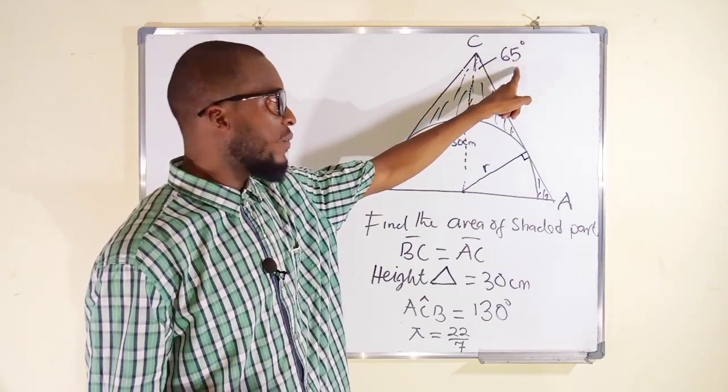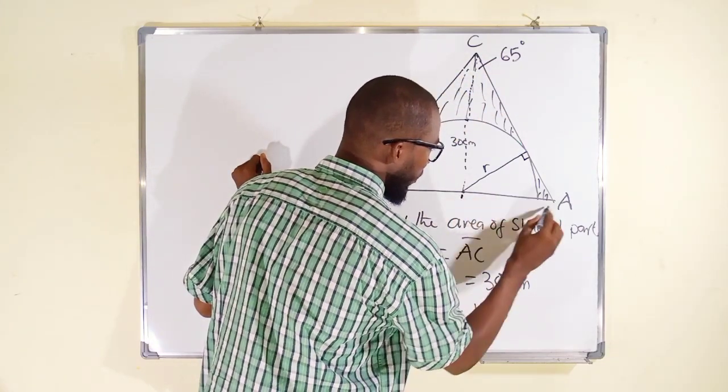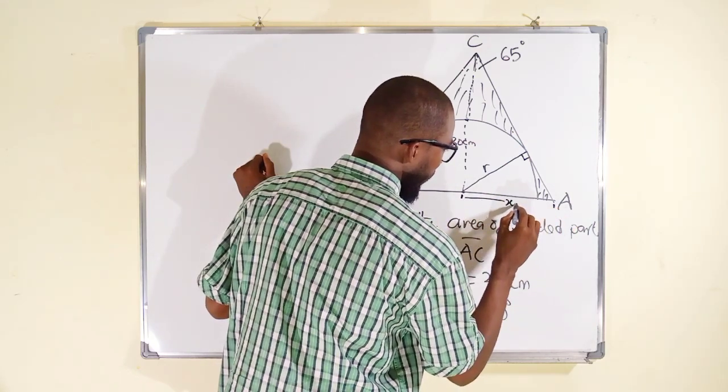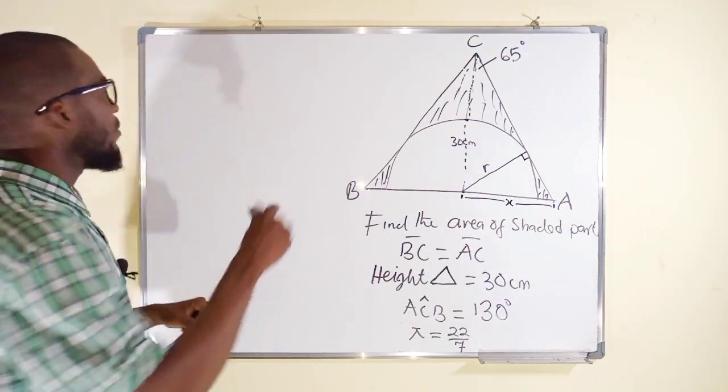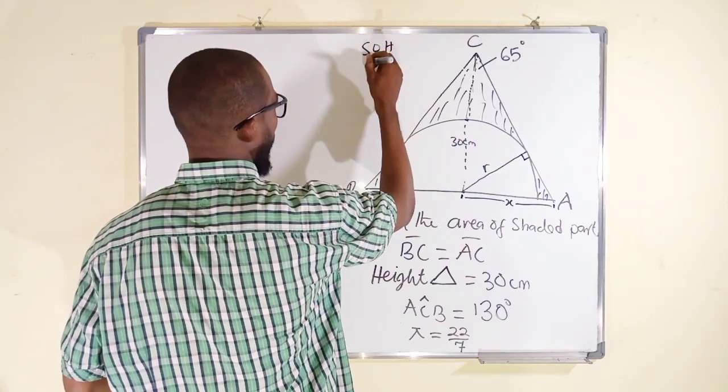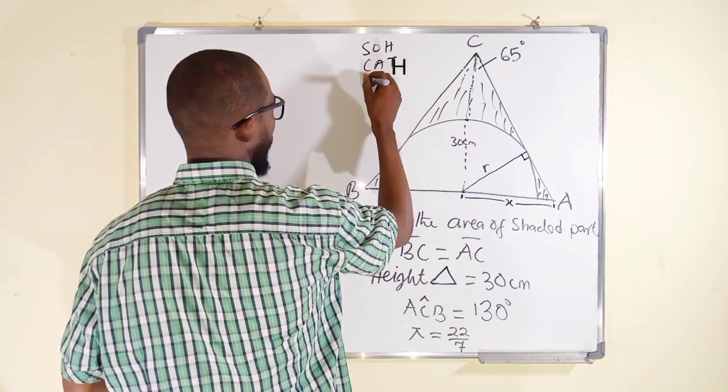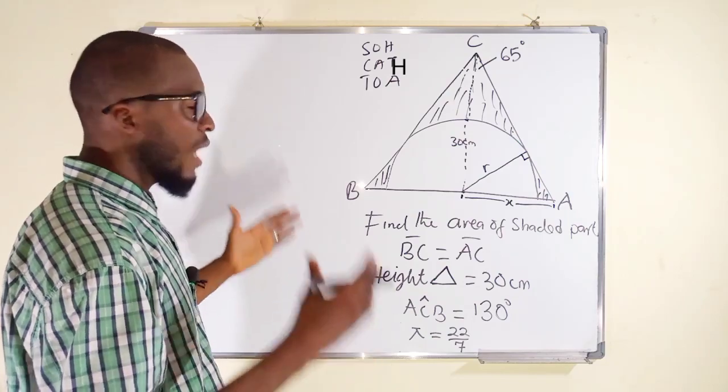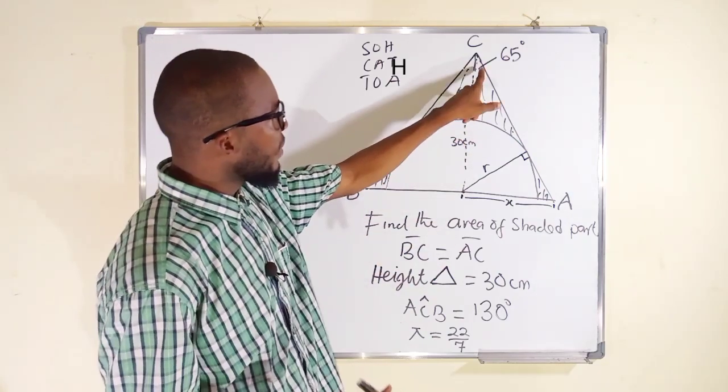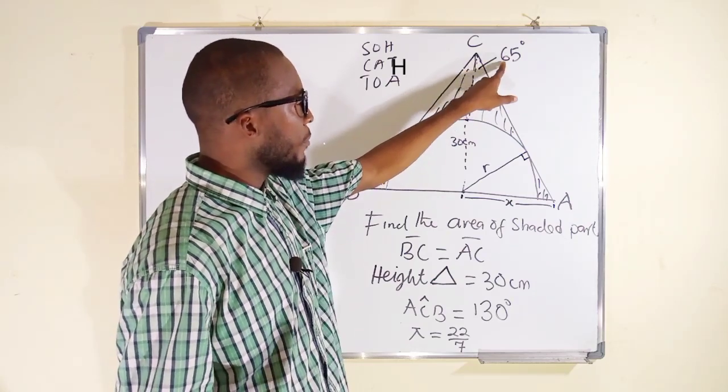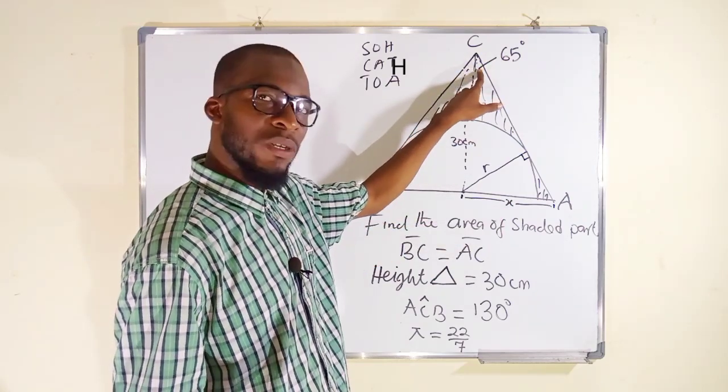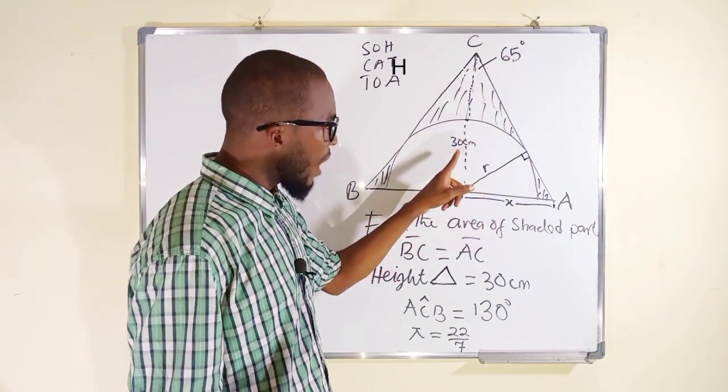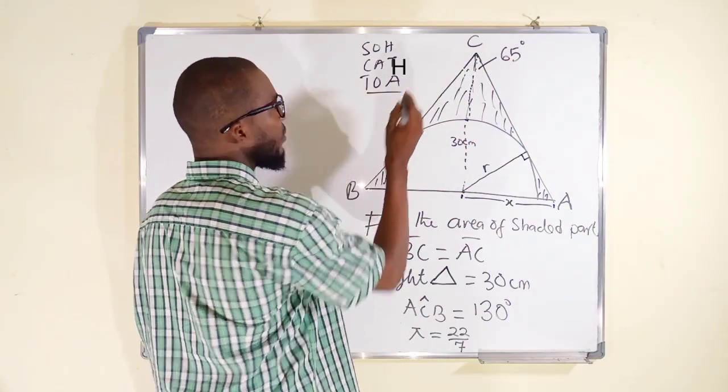Having known this angle to be 65, we want to find the distance from this point to this point, and we can call it x. Remember SOHCAHTOA - it's telling us the relationship between different side lengths and the angle in between them. We are given this angle to be 65, and x is said to be opposite to that angle. So we have opposite, and this height is adjacent to that angle. So we have opposite, we have adjacent. This is what we have to use - tan.